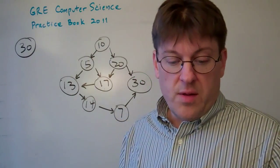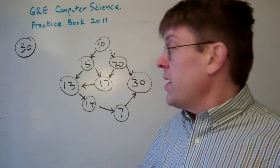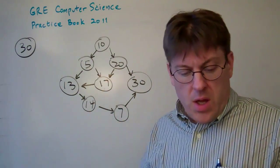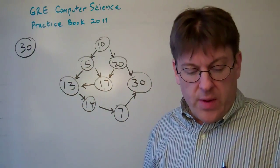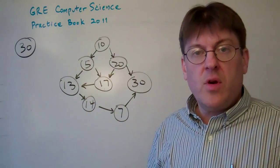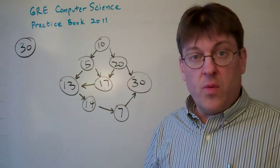Question 30. Consider the following directed graph. Which of the following is a topological sort of the nodes of the graph?